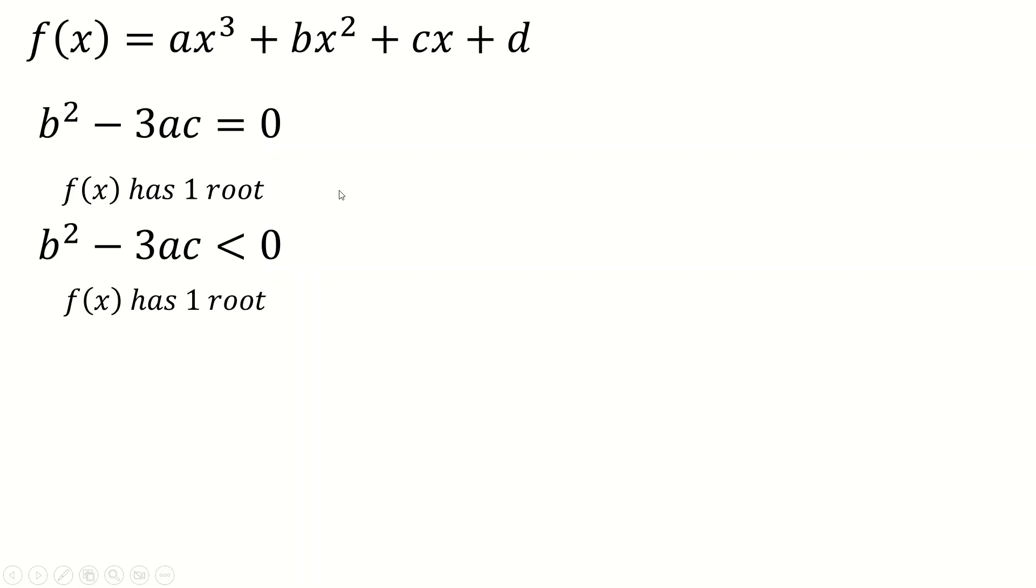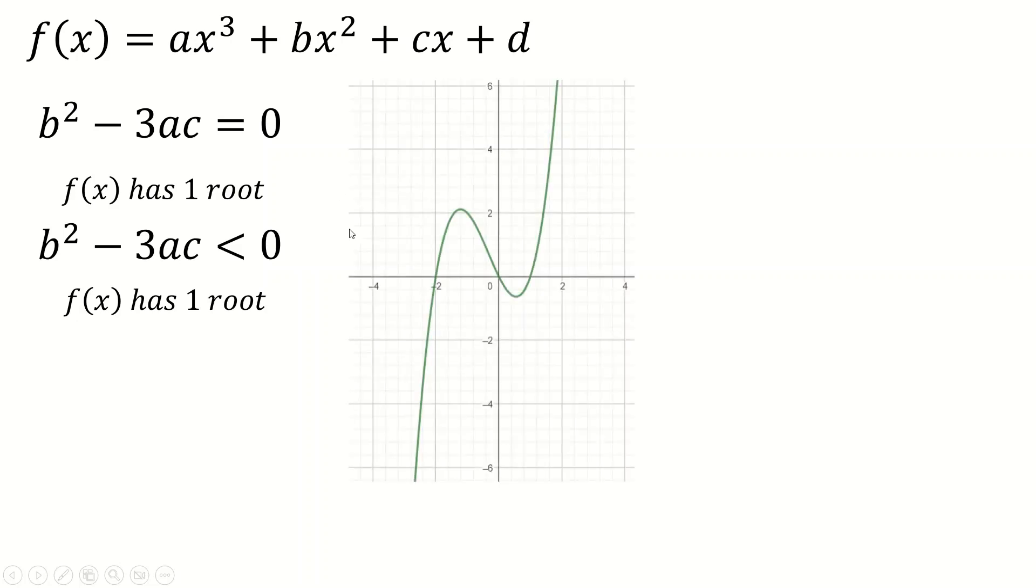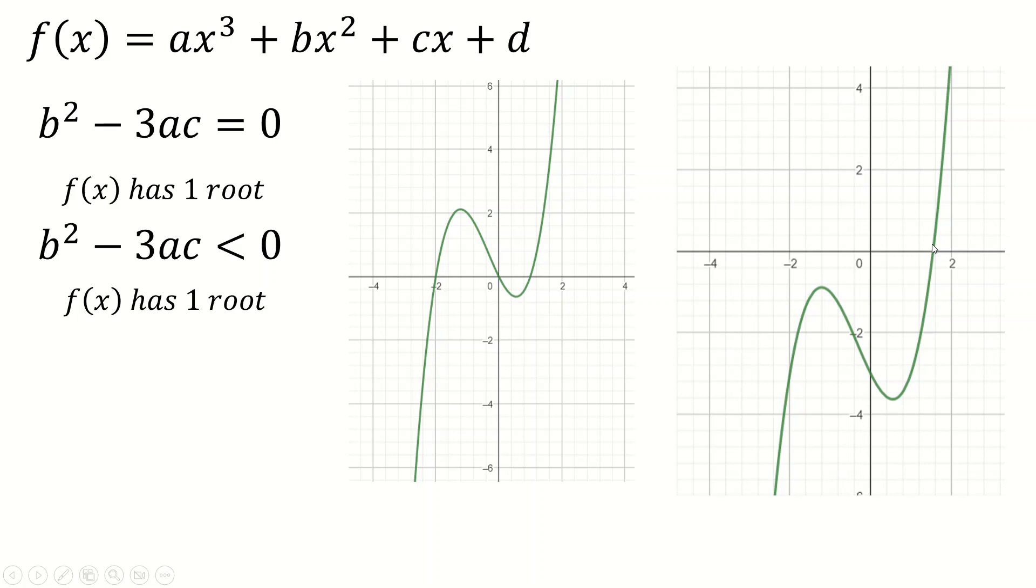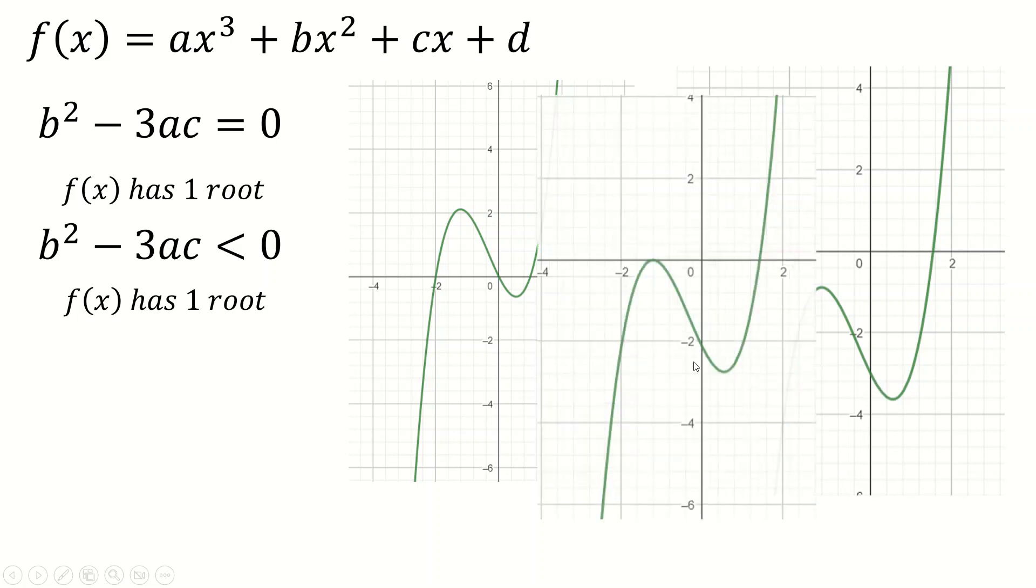Now, if b squared minus 3ac is greater than zero, you're in a bit of a pickle, because it means you've got two stationary points, remember? And you could have three roots, you could have just one root, if the two stationary points are below the axis, or you could even just have two roots, where one of them is repeated here. So you actually don't learn anything, really, if b squared minus 3ac is greater than zero.